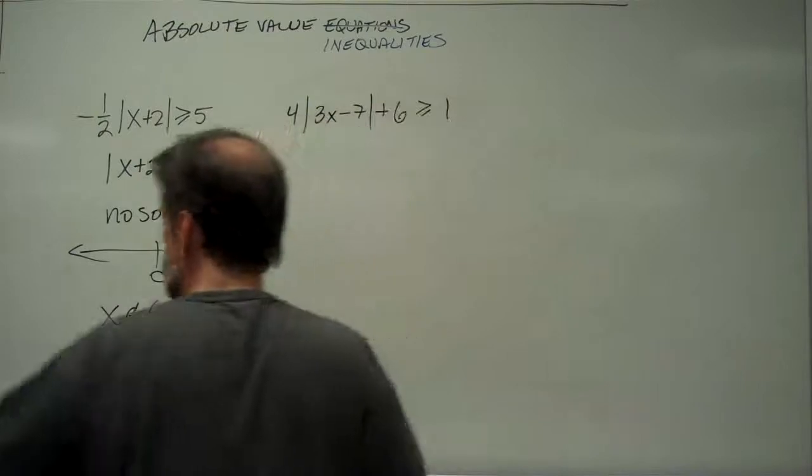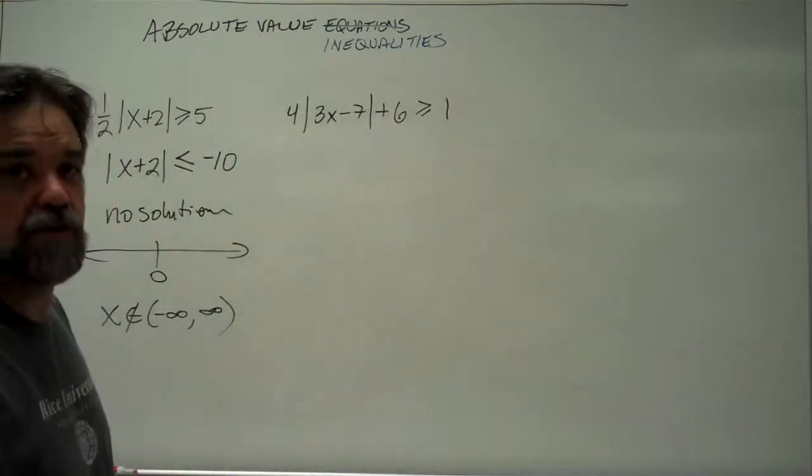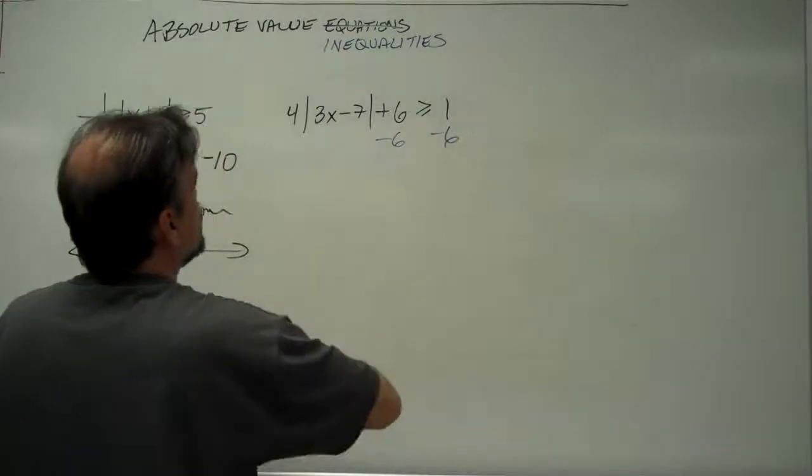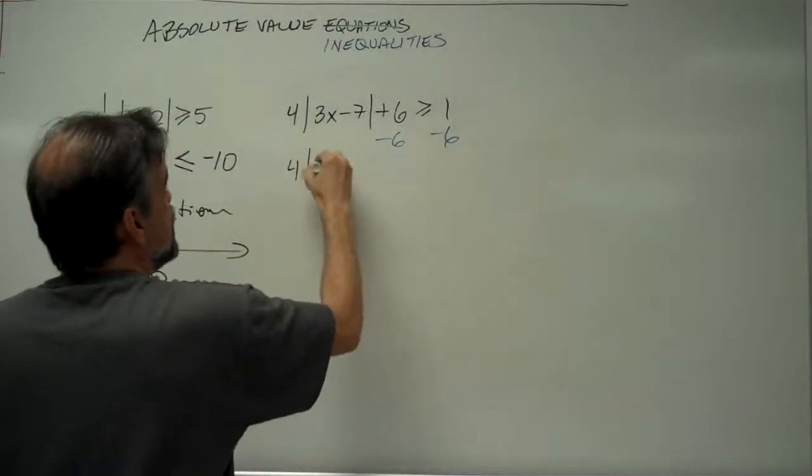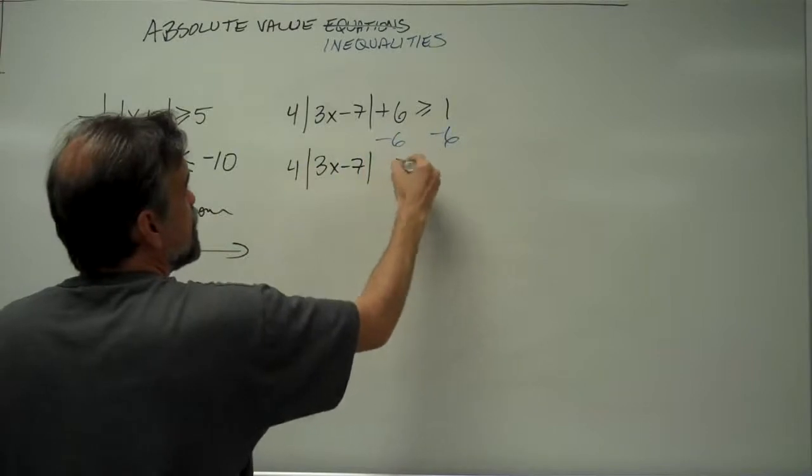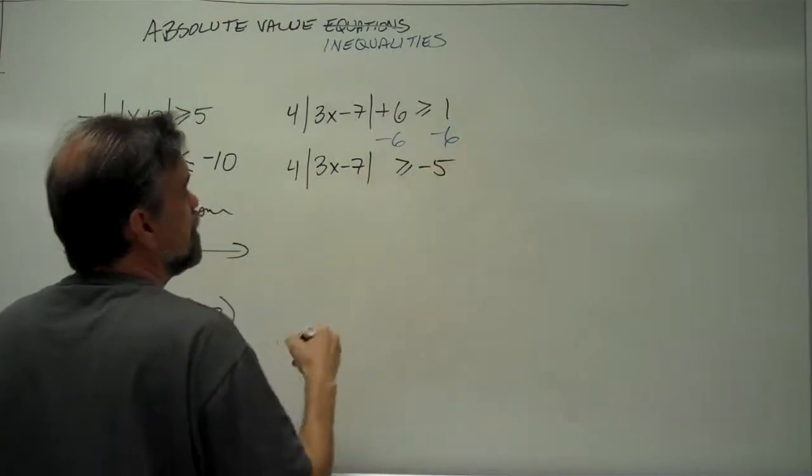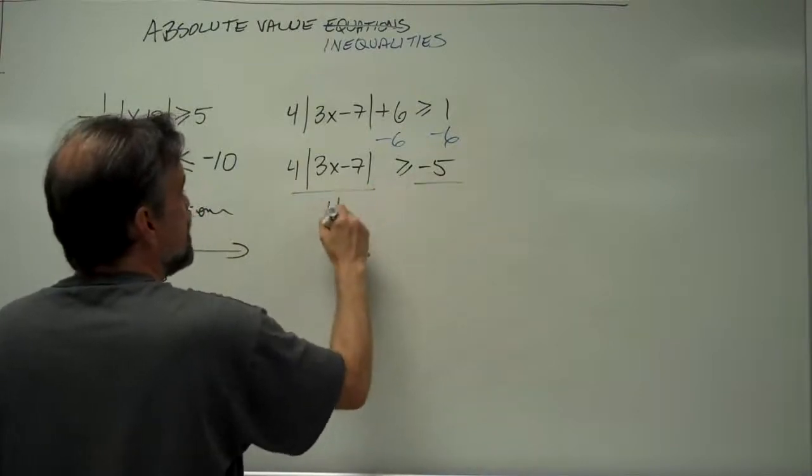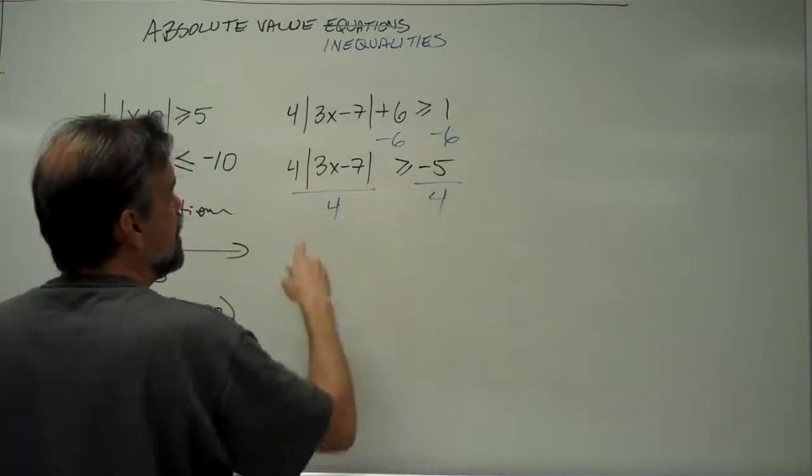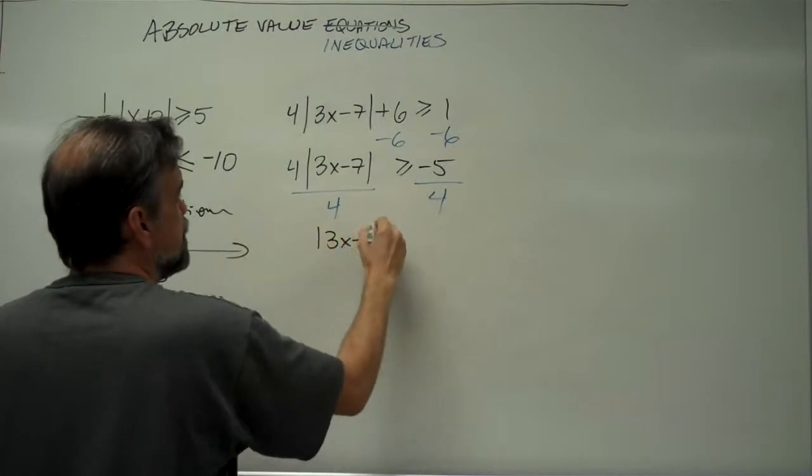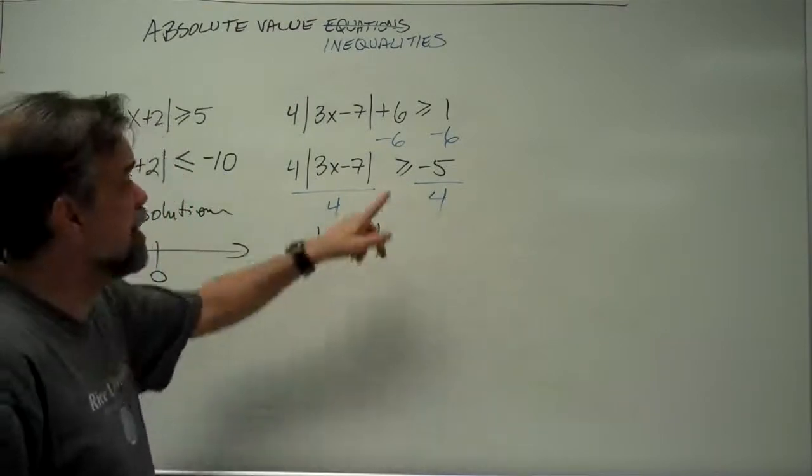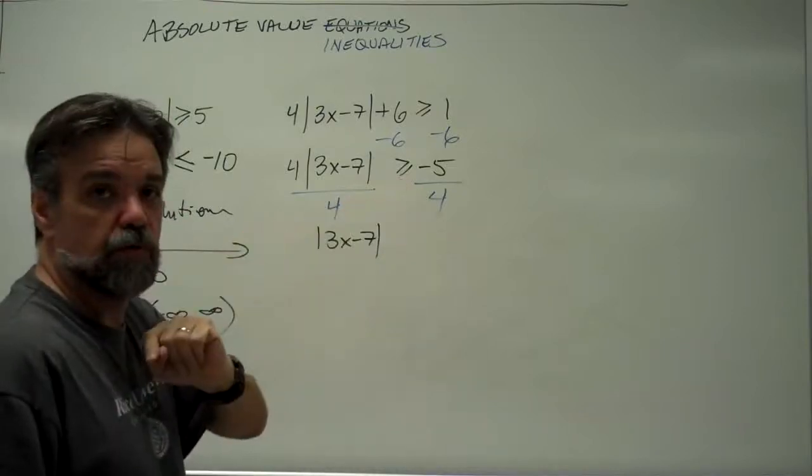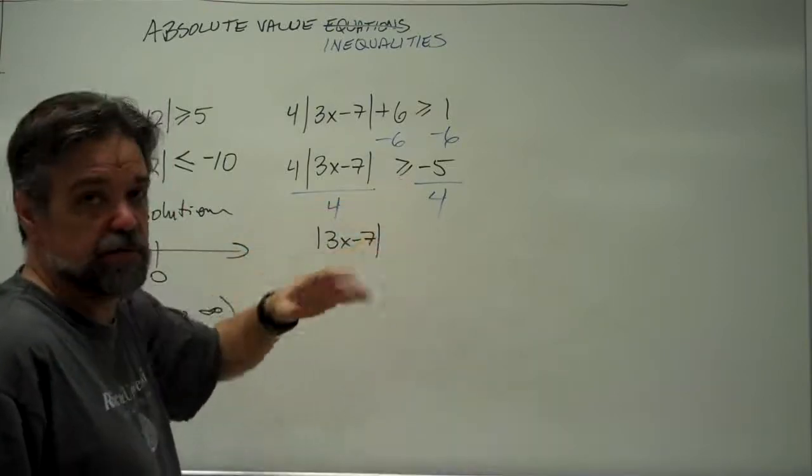So, let's undo all these steps, starting with the last one. We're going to undo the 6, and we get 4 times the absolute value of 3x minus 7 greater than or equal to negative 5. Then we're going to divide both sides by 4, and we get the absolute value of 3x minus 7. Now, do I need to change the direction of that inequality? No. Why not? Because I divided by a positive number.